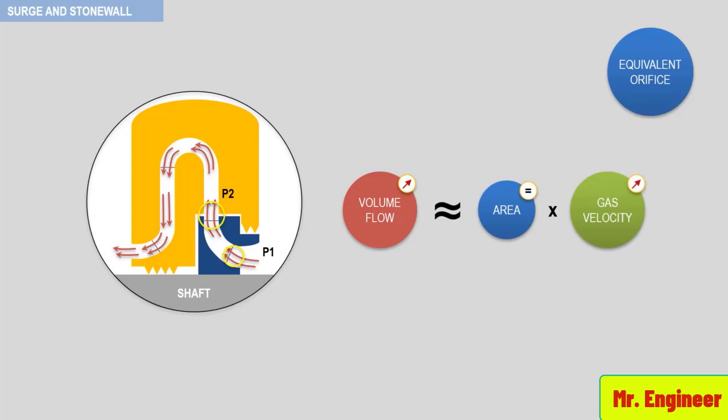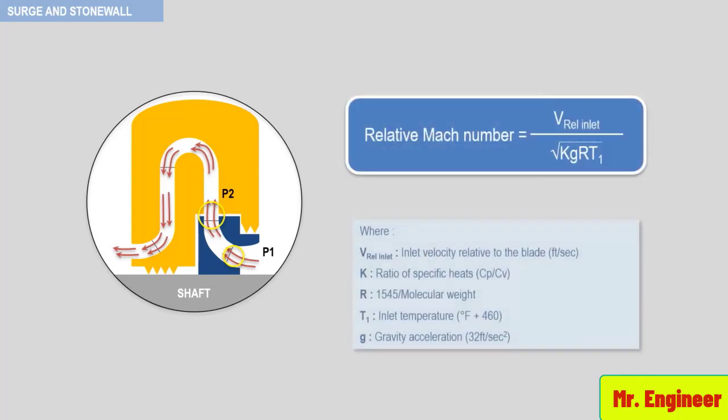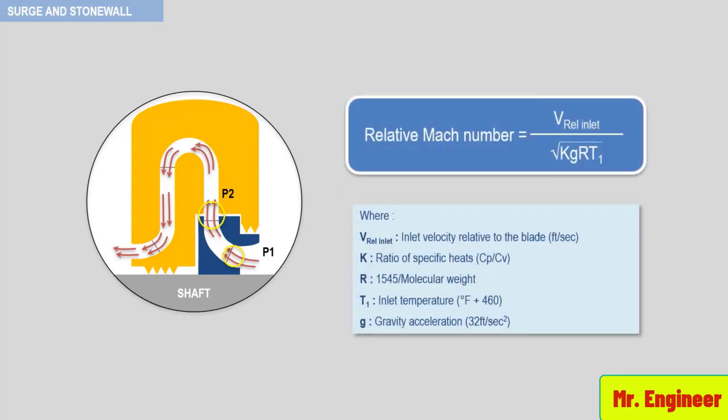The limit of compressor high volume flow is controlled by the relative Mach number, which is defined in the following equation. When the relative Mach number is equal to 1, the maximum possible flow by any dynamic compressor is attained. Relative Mach number is the ratio of the gas impeller inlet relative velocity to the sonic velocity of the process gas being handled.